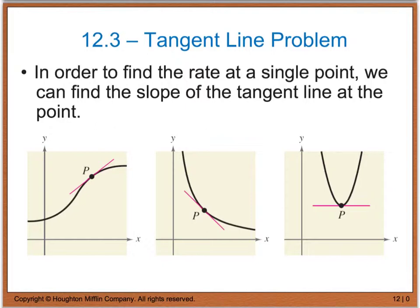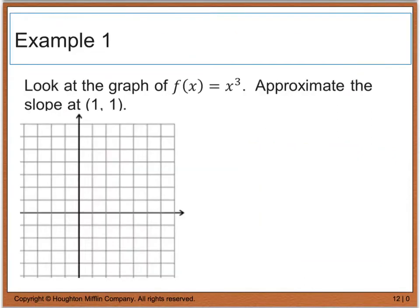Here are three different examples. If we want to find the slope at a given point, we're just going to find the slope of the tangent line. The same applies for finding the rate of change at any point — we find the slope of the tangent line there. Example 1 says to look at the graph of f(x) = x³ and approximate the slope at the point (1, 1). We now need to calculate the slope of the tangent line at our point (1, 1).